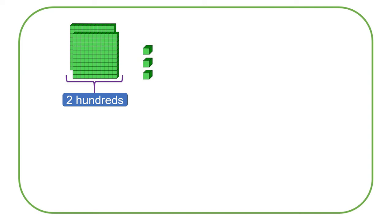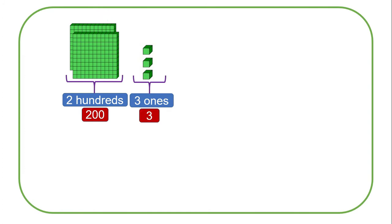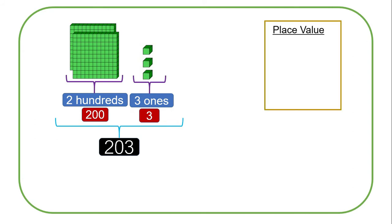Next, we have got two blocks of hundreds and three blocks of ones. This time we do not have the blocks of tens. Since we have two blocks of hundreds, it means we have got 200. Three blocks of ones means we have got three. The whole number is two hundred and three. The place value of three is ones, the place value of zero is tens, and the place value of two is hundreds.